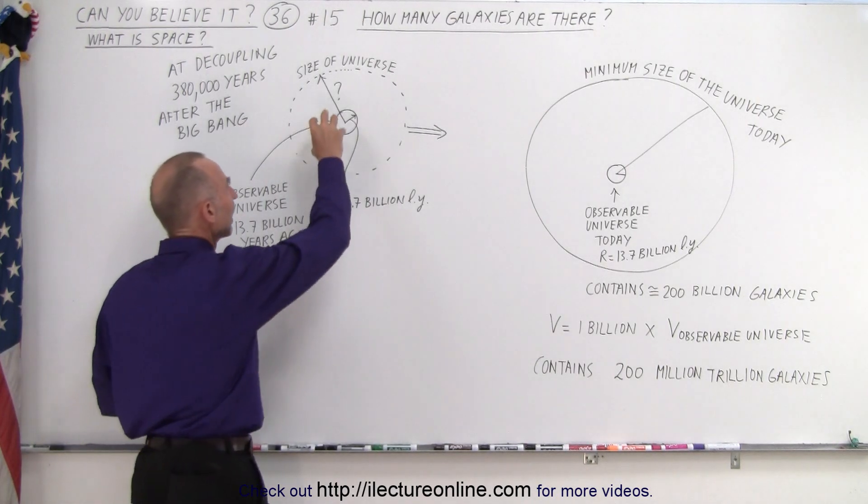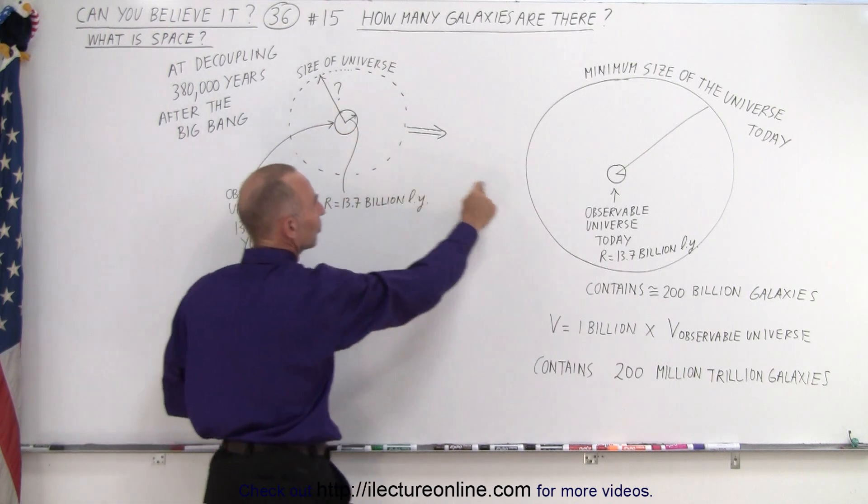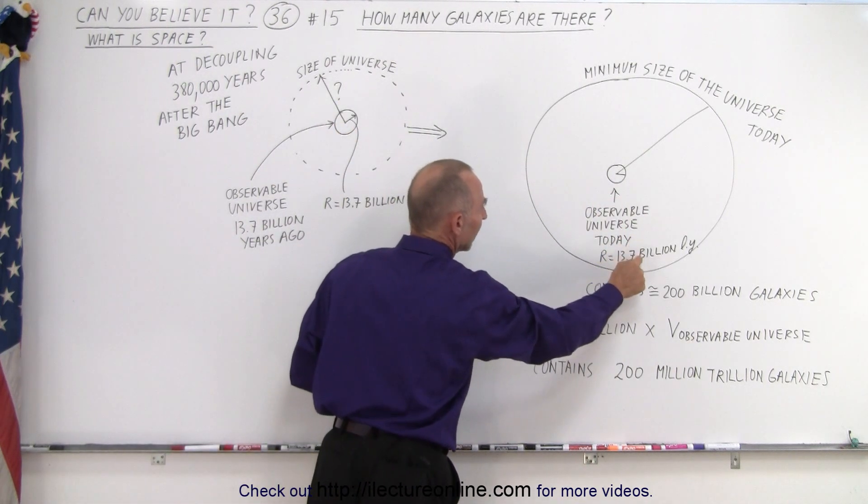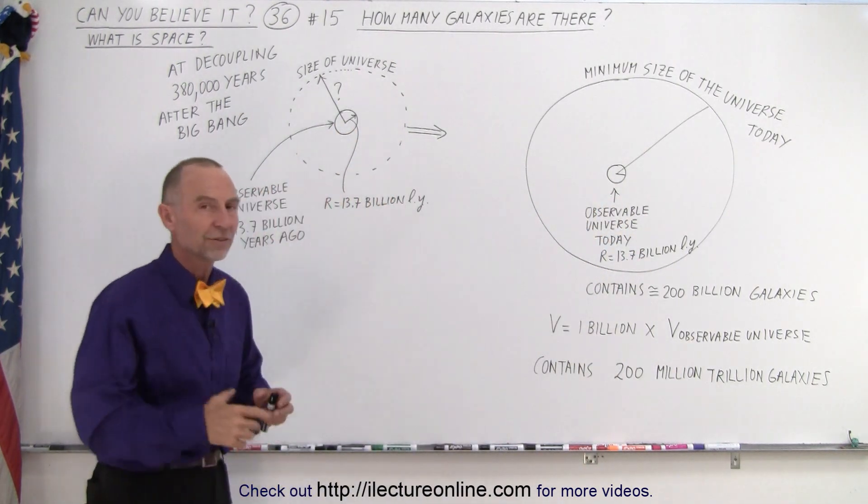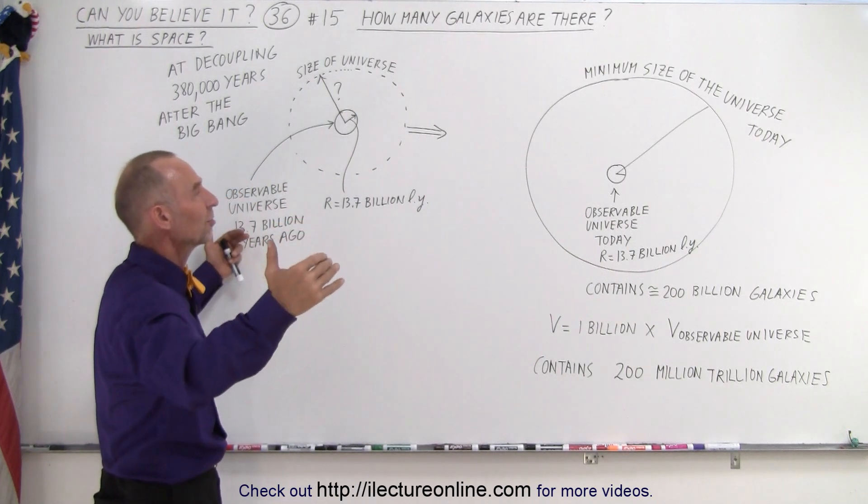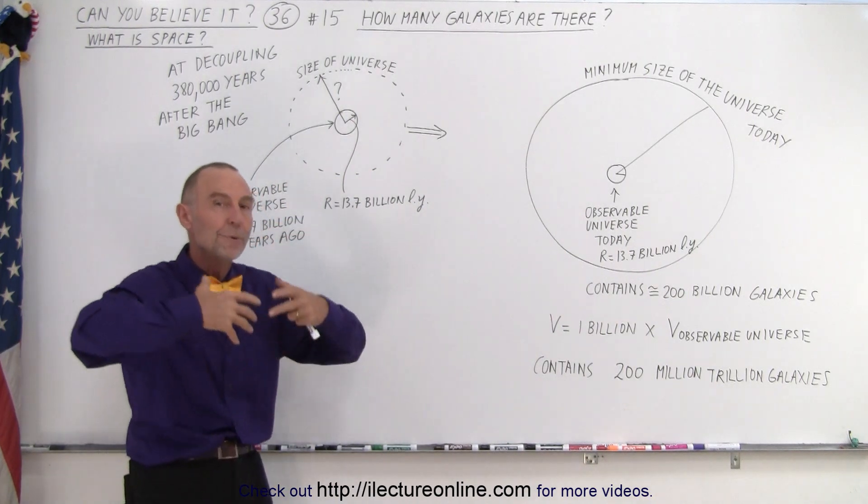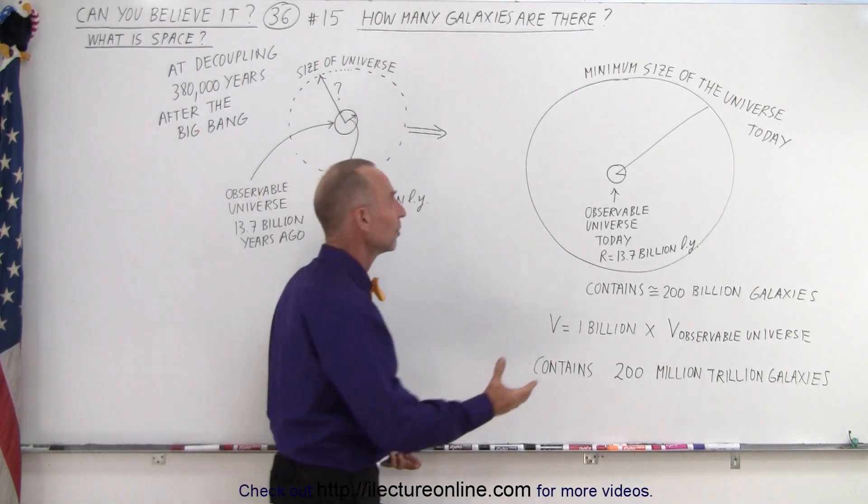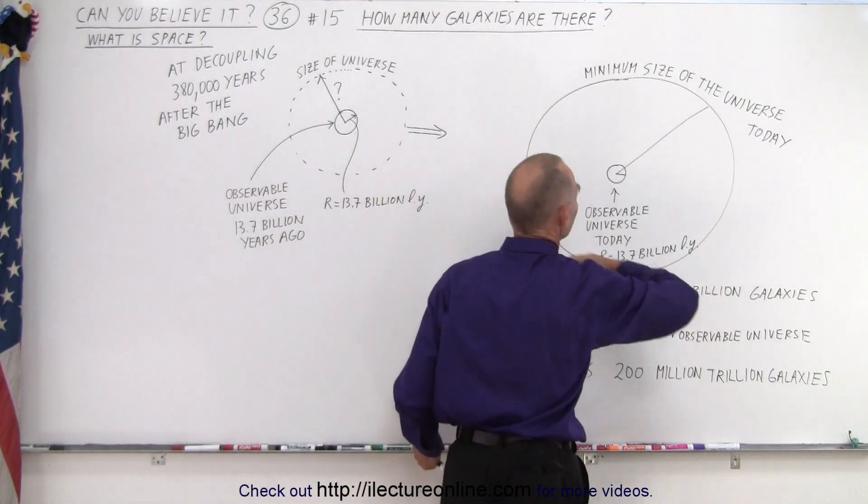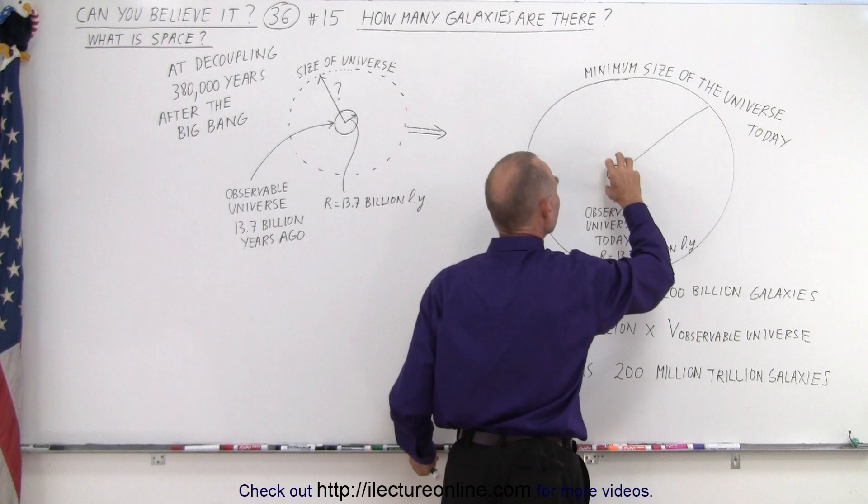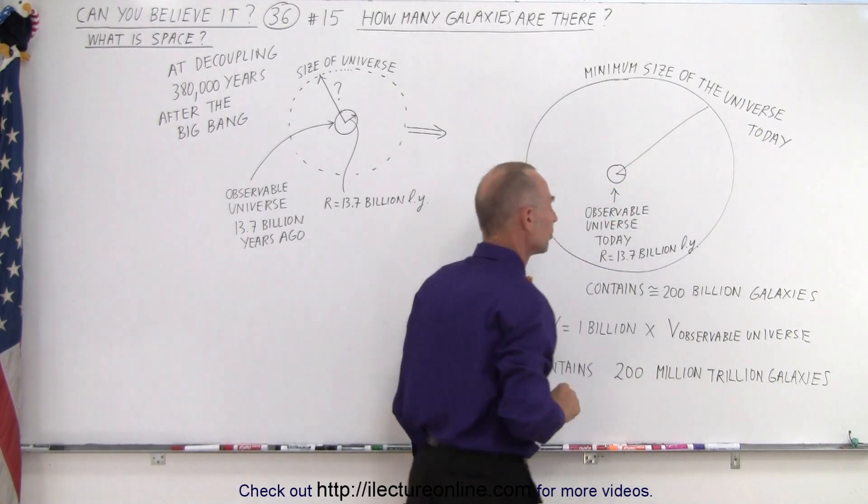Which means that that portion of the universe which is visible today, the observable universe today with a radius of 13.7 billion light years, has expanded a thousand fold in all directions or a billion times in volume. So now we know that the minimum size of the universe today must be at least a billion times the volume of the observable universe.